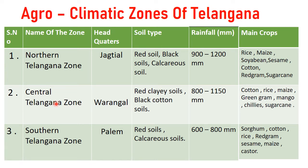Central Telangana zone headquarters is Warangal. Soil types are red clay soils and black cotton soils. Rainfall ranges from 800-1150 mm. Main crops are cotton, rice, maize, green gram, mango, chili, and sugarcane.